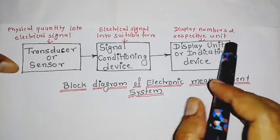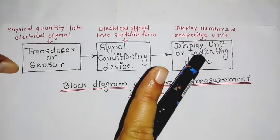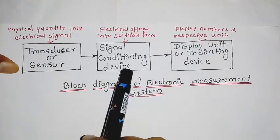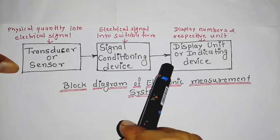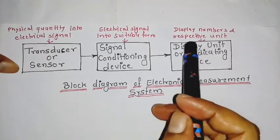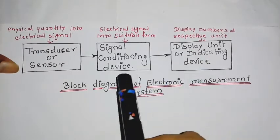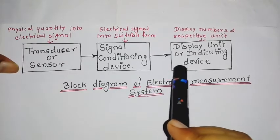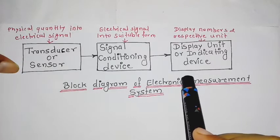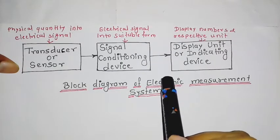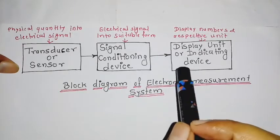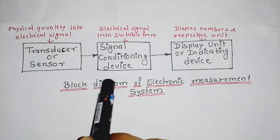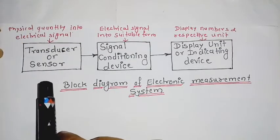The advantages of this instrument are: first, power consumption is very low; second, size is compact; third, the display is convenient and effective; and fourth, data recording and remote sensing are possible with the help of this system.